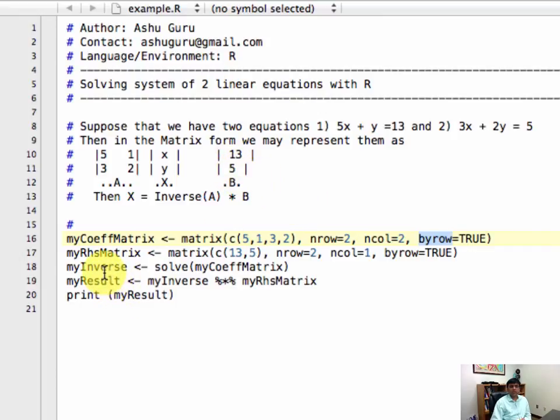So the inverse calculation is very simple. You feed in the value of the coefficient matrix to the function called solve, and it returns you the inverse matrix if it exists.